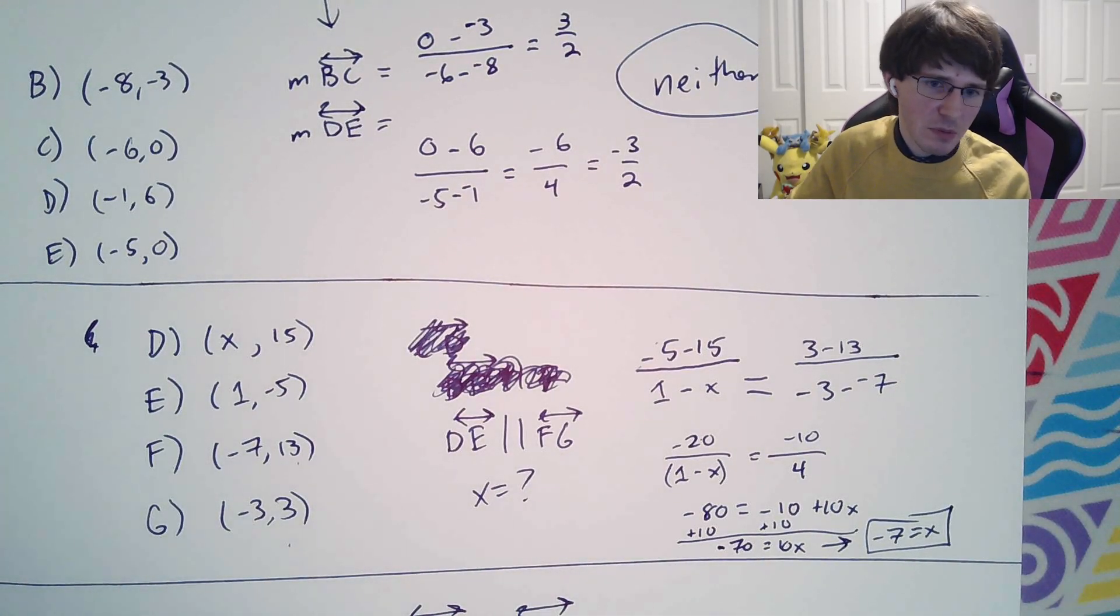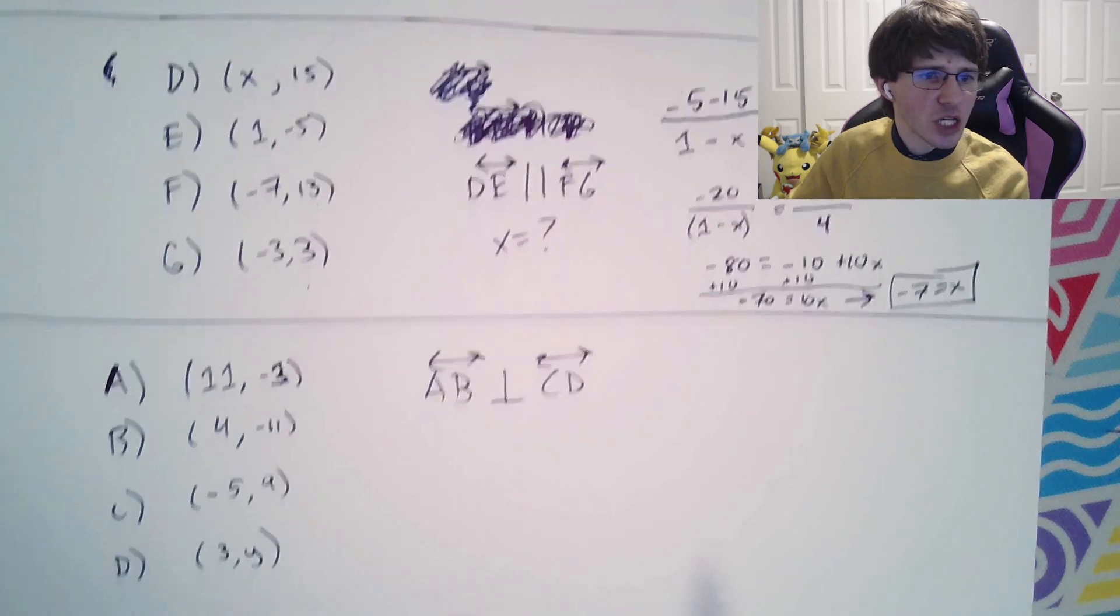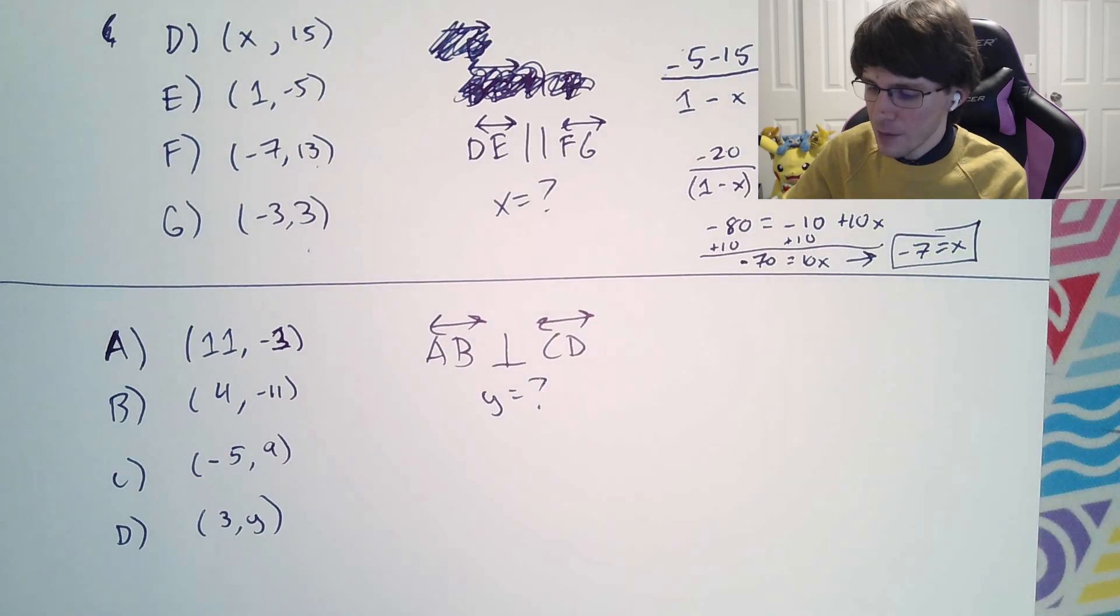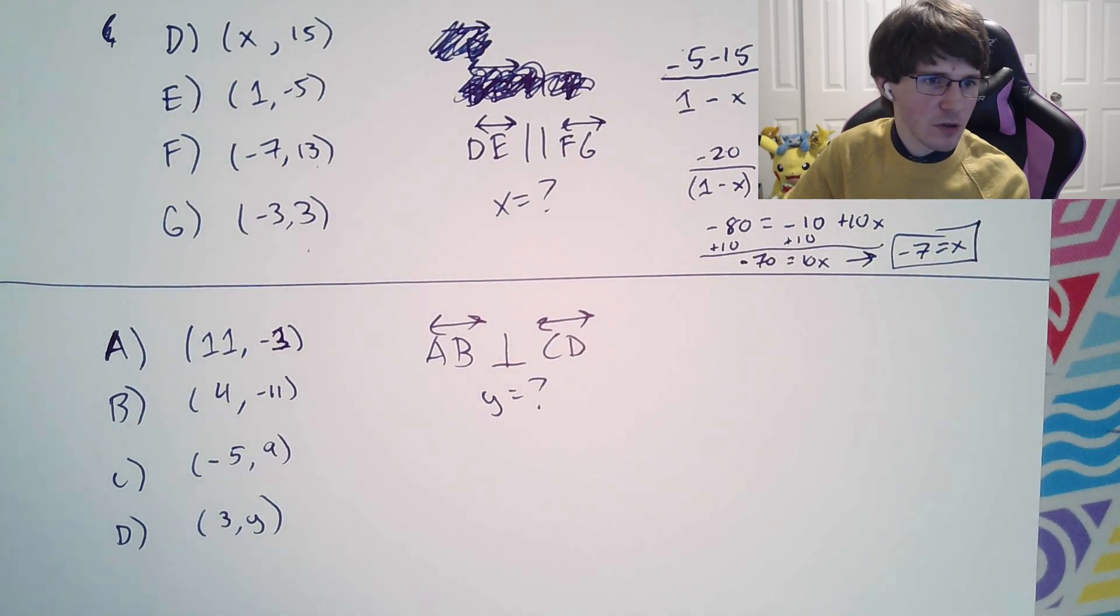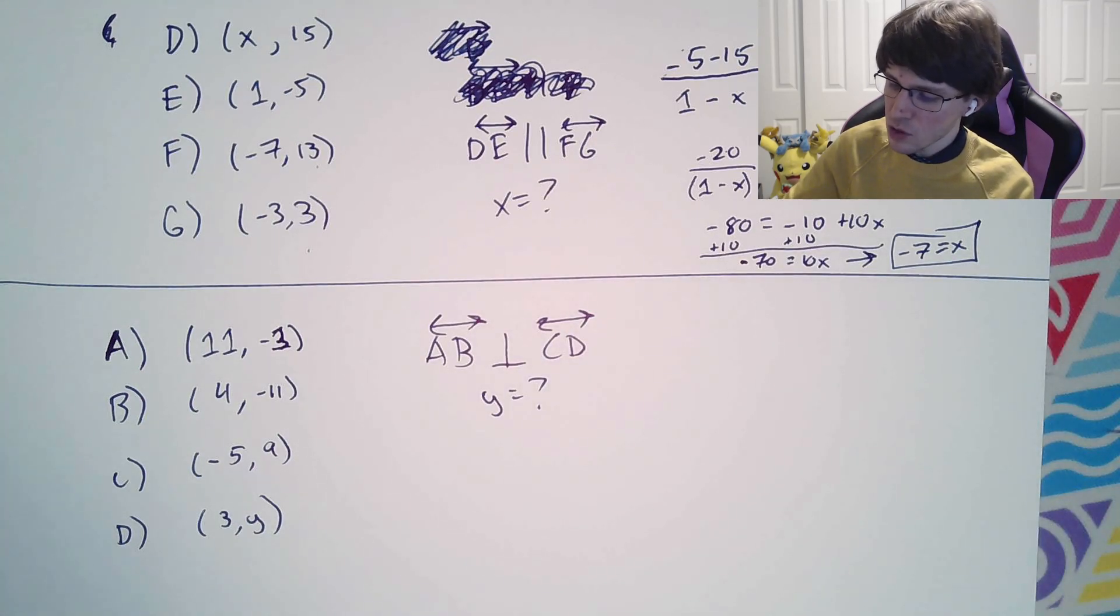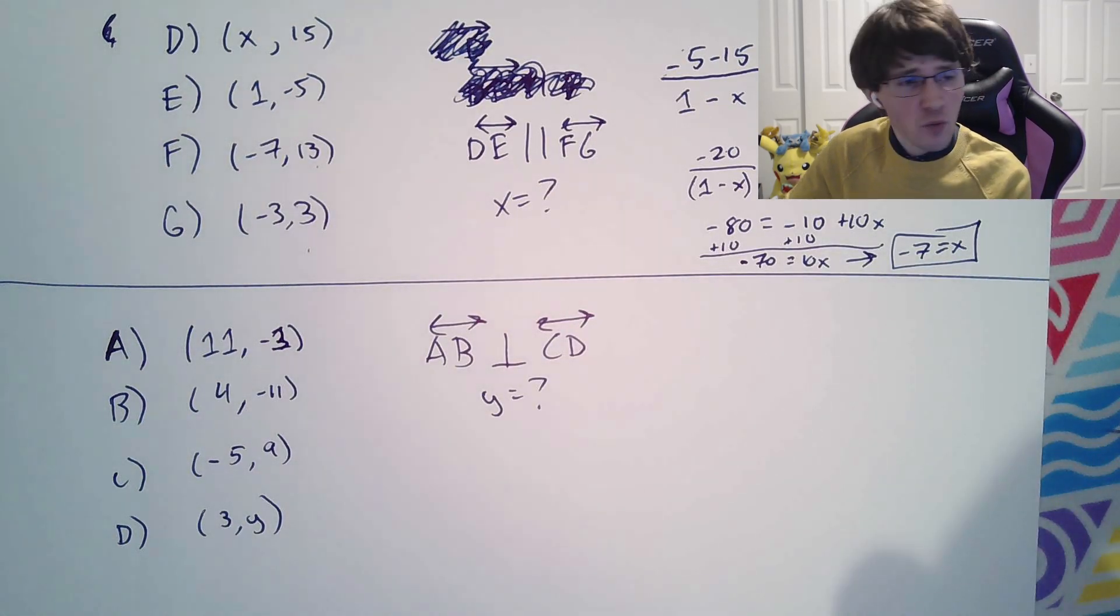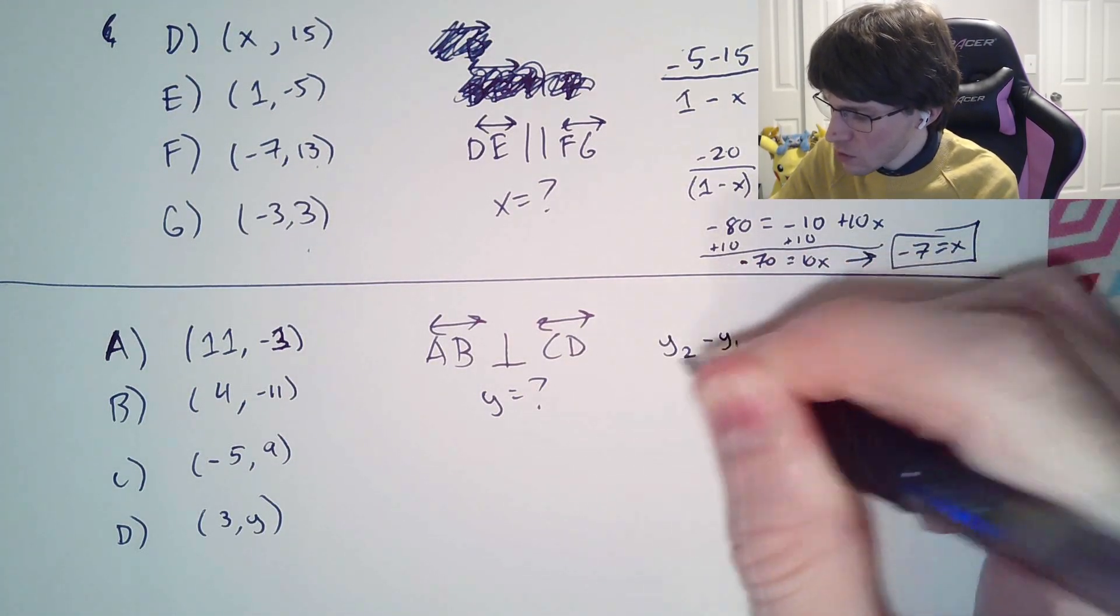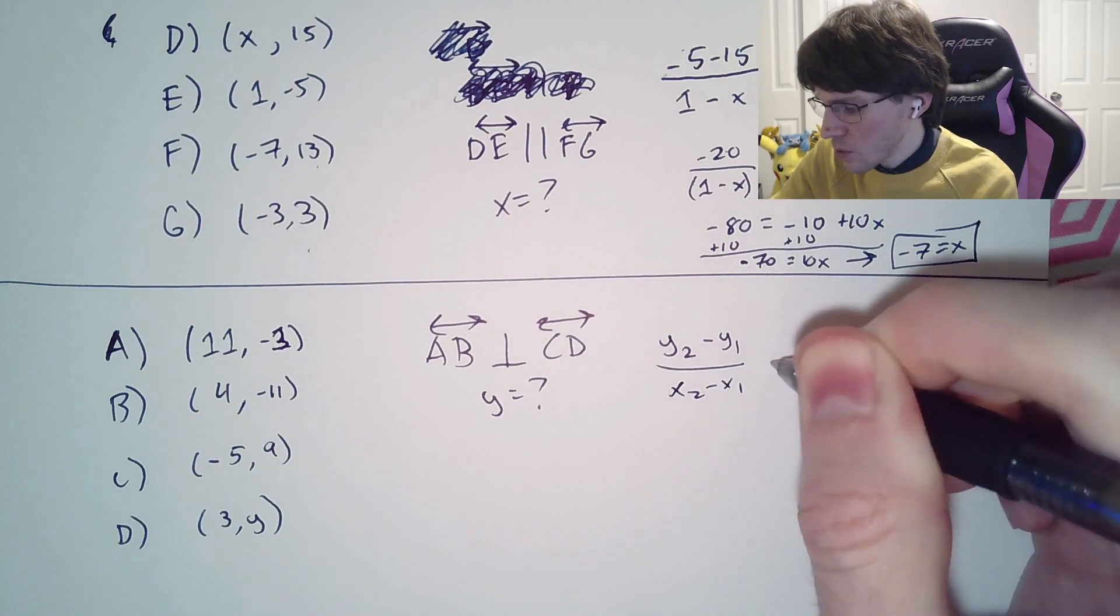Now the last type of problem you might end up seeing are going to be questions like this, where you're told that these guys are perpendicular, and what is y? So in this type of problem, if you're looking to figure out what y is, now they're perpendicular, they're not going to be exactly equal to each other, but instead negative reciprocals of each other.